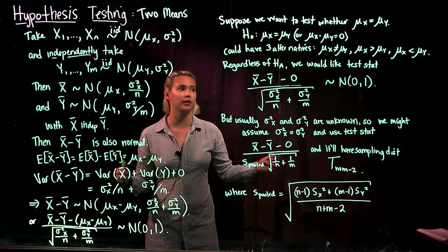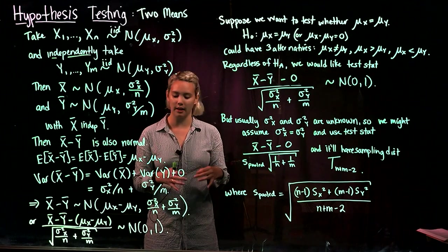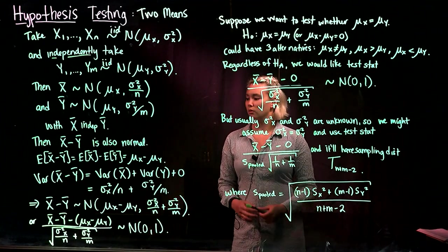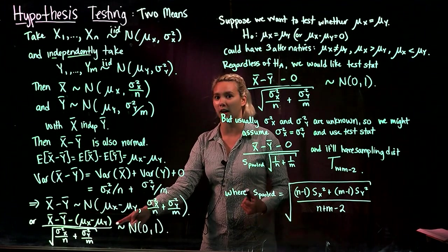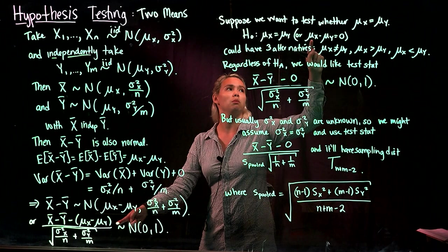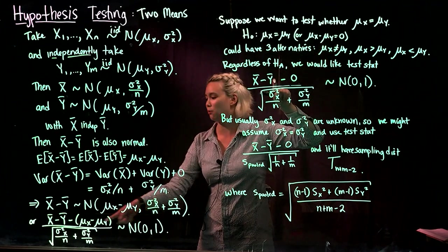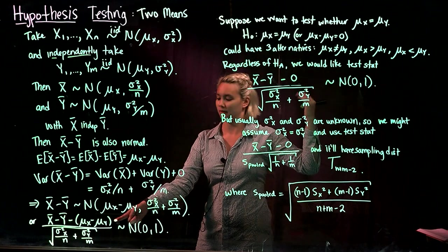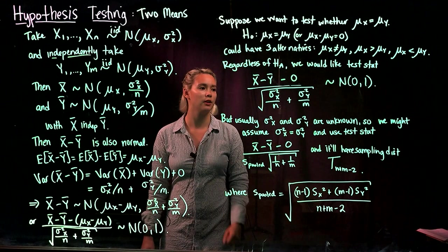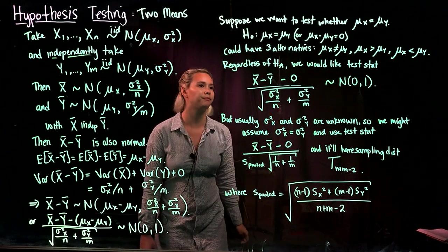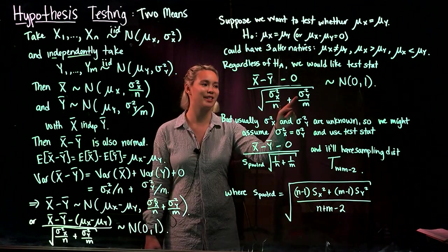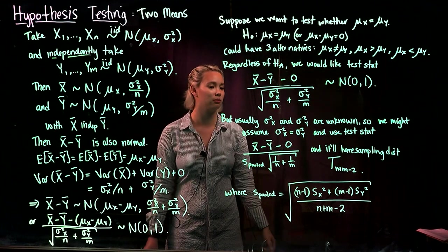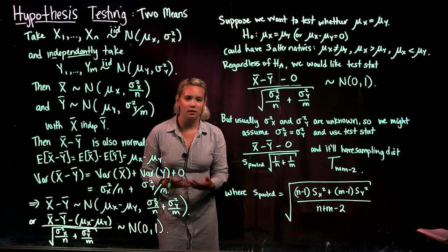Regardless of the alternative hypothesis, we need a test statistic. We'd like to use the standardized form since we know its sampling distribution is standard normal. Under the null hypothesis, mu x minus mu y equals zero, so the test statistic becomes x̄ minus ȳ divided by the square root of sigma squared x over n plus sigma squared y over m. If we knew sigma squared x and sigma squared y, we could use this directly.